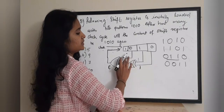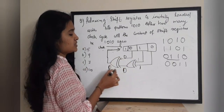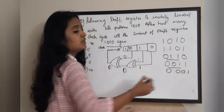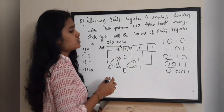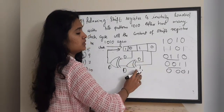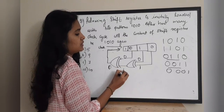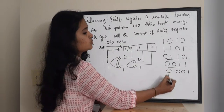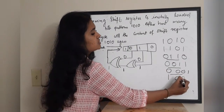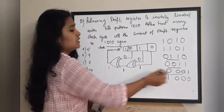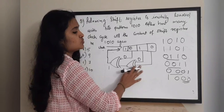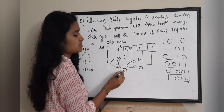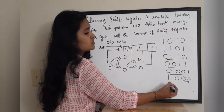Continuing: 1 XOR 0 = 1, then 1 XOR 1 = 0, so 0 comes in giving 0 0 1 1. Then 1 XOR 1 = 0, and 0 XOR 0 = 0, giving 0 0 0 1. Then 0 XOR 1 = 1, and 1 XOR 0 = 1, giving 1 0 0 0. Then XOR of two 0s = 0, so 0 comes in giving 0 1 0 0.